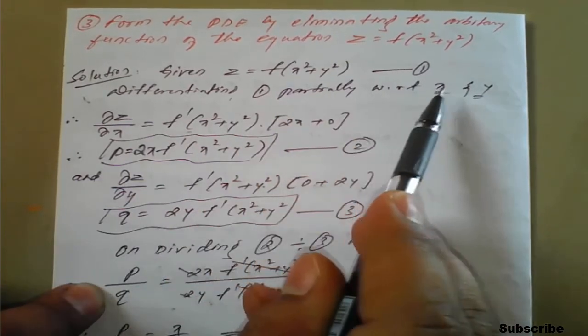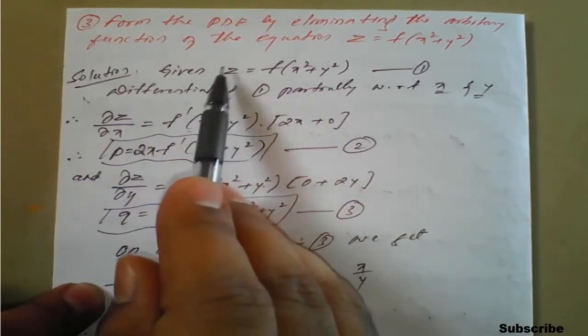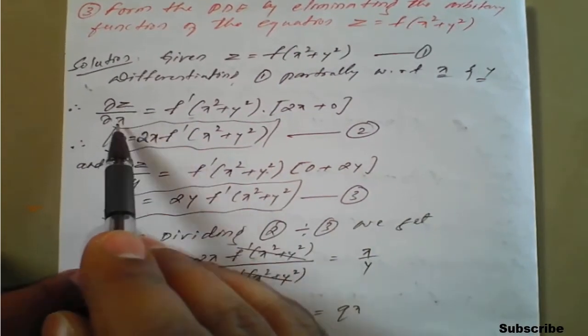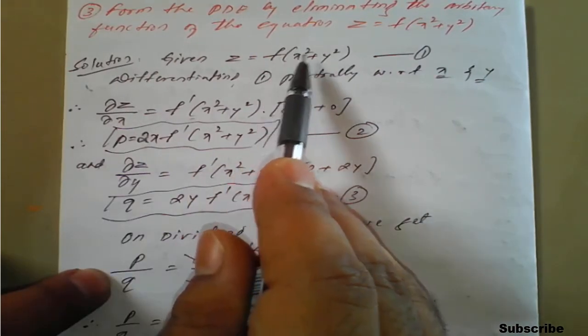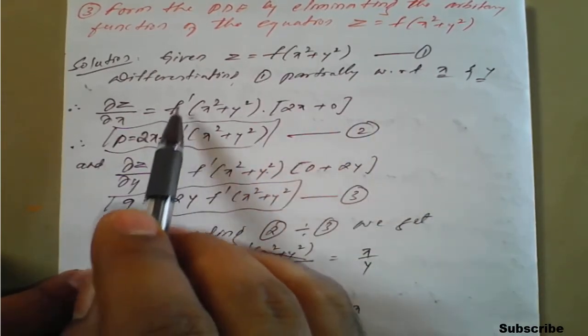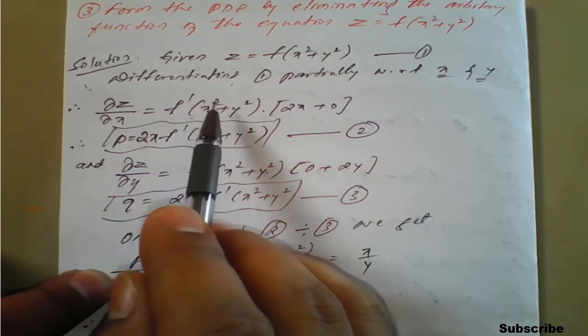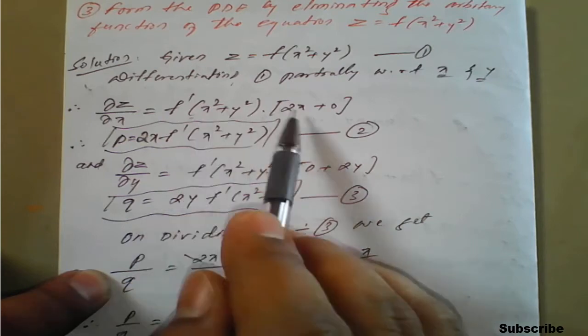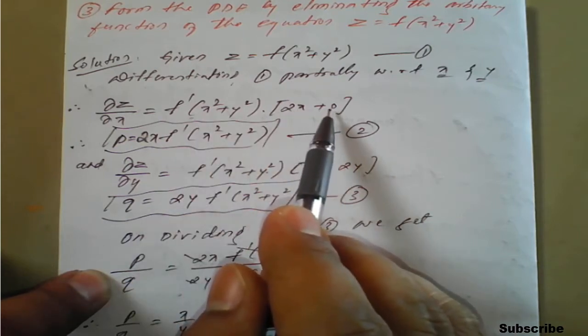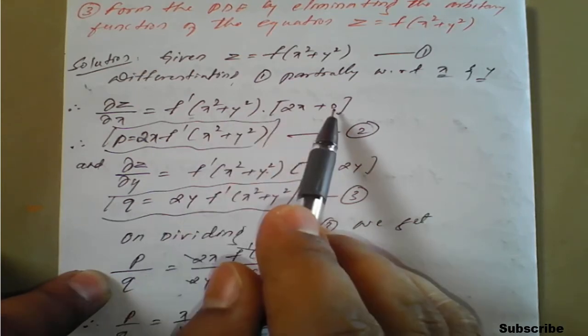Differentiate one partially with respect to x and y. With respect to x, what happens here: ∂z/∂x. f of x square plus y square with respect to x partially will become f dash of x square plus y square, and differentiation of x square plus y square will be 2x plus 0. 0 is because we are doing partially with respect to x, so y will be purely constant which is 0.